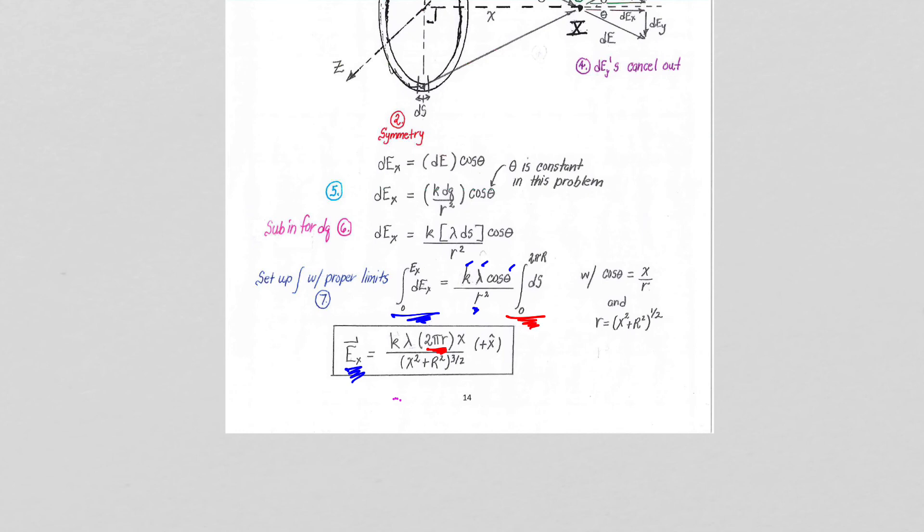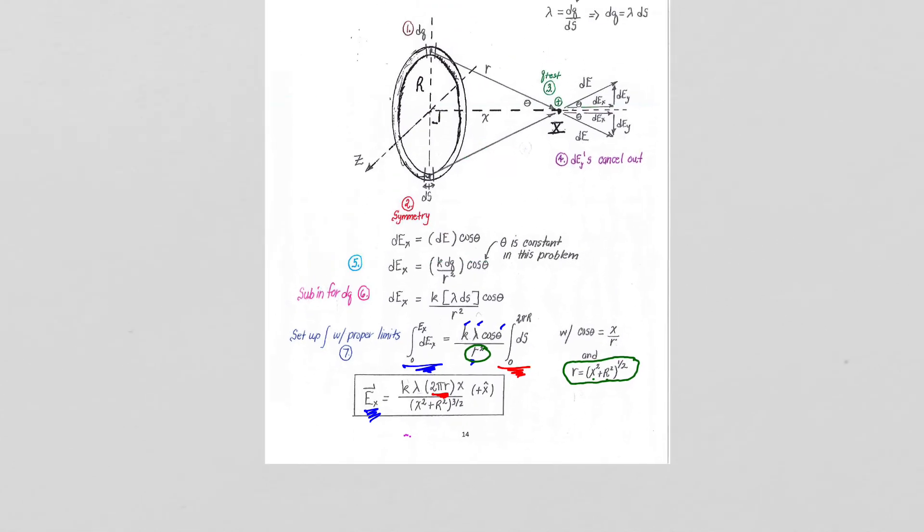Now, we want E as a function of x, so the only thing we have to be a little careful with in this problem is that the r in this r squared is actually, by Pythagorean theorem, quantity x squared plus r squared square root, and we can see that here. So this little r is related to the x and the capital R by the Pythagorean, so we get our final answer.